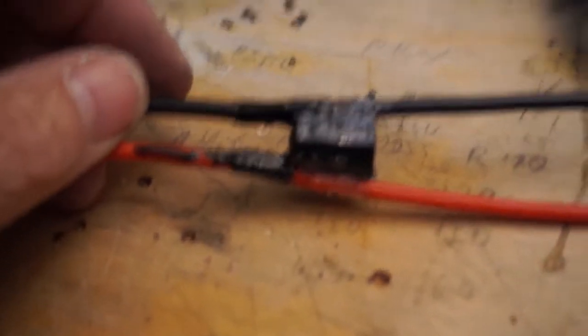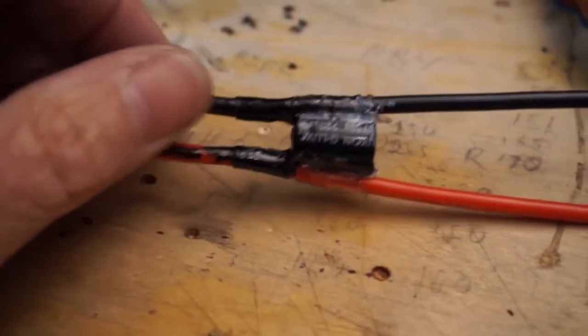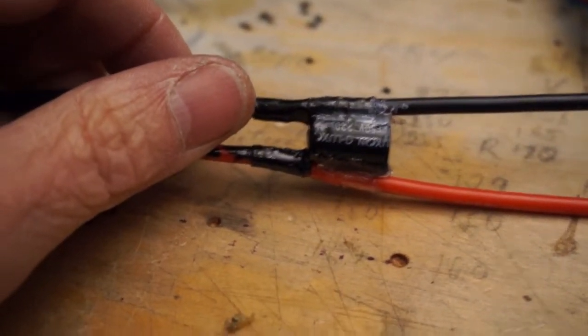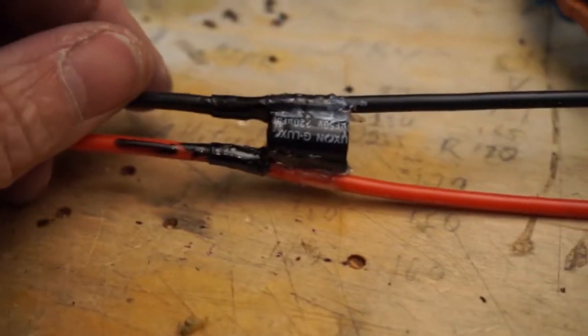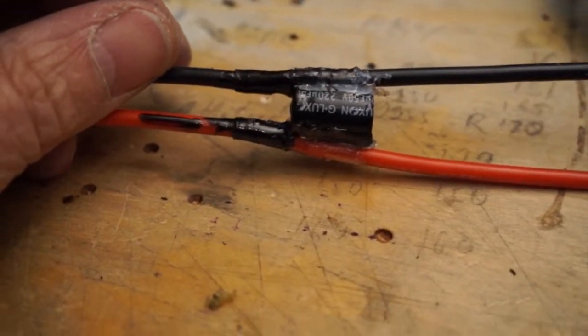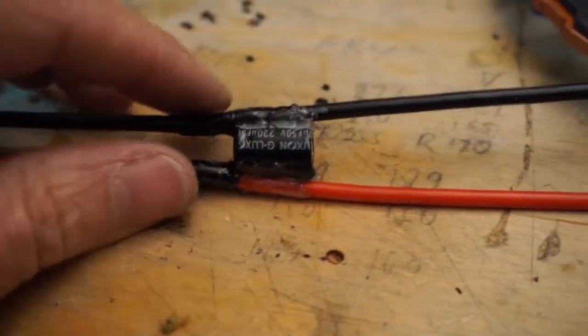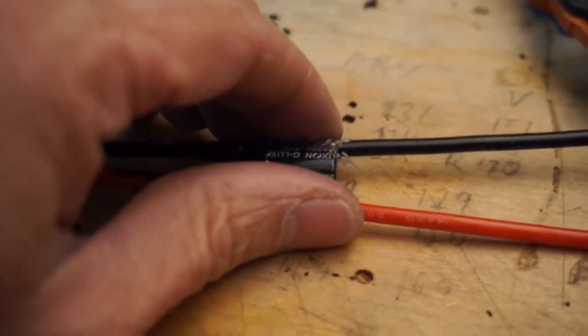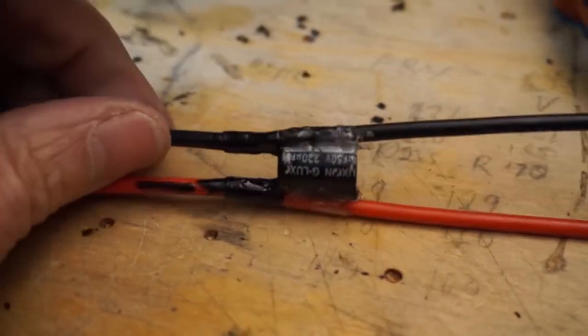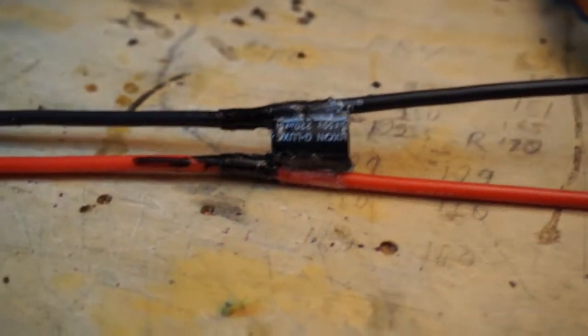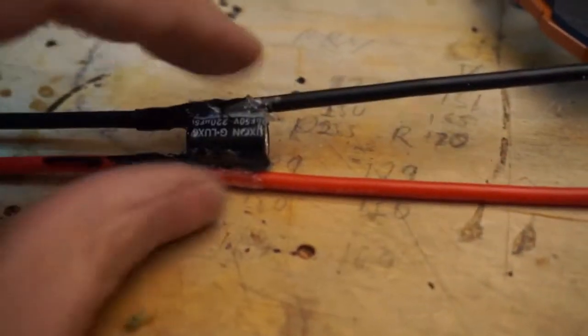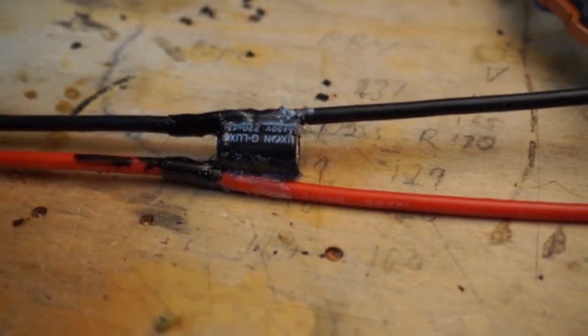What's this little thing right here? Well, this is a capacitor. It is a 220 microfarad, 50 volt capacitor. Now why would I solder a capacitor in parallel to these wires? What is the purpose of that?